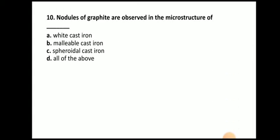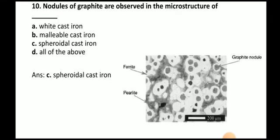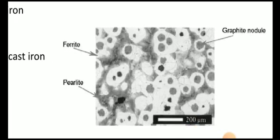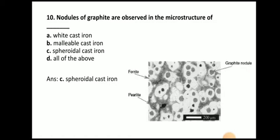Next question: Nodules of graphite are observed in the microstructure of — white cast iron, malleable cast iron, spheroidal cast iron, or all of the above? The answer is spheroidal cast iron. Here you can see the microstructure of spheroidal cast iron, which contains ferrite, pearlite, and graphite nodules — the circular objects known as nodules.